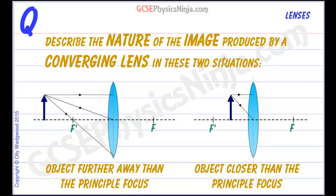Describe the nature of the image produced by a converging lens, that's a convex lens, in these two situations.